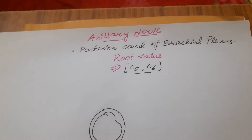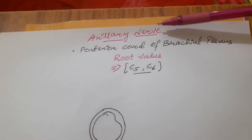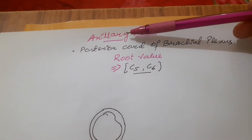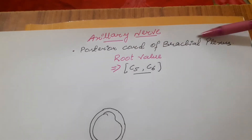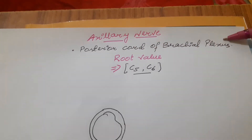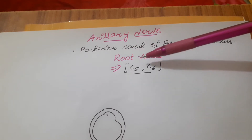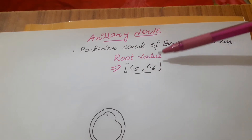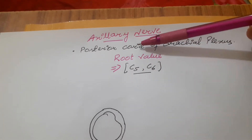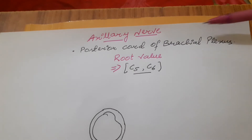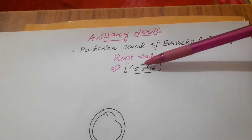Today we discuss the axillary nerve. The axillary nerve arises from the posterior cord of the brachial plexus, having root values C5 and C6.